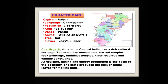Chhattisgarh — capital Raipur. Chhattisgarh, situated in central India, has a rich cultural heritage. The state has monuments, carved temples, rock paintings, Buddhist temples, tiger reserves and wildlife sanctuaries. Agriculture, mining and energy production is the basis of the economy. The NTPC is located in Chhattisgarh and helps in the production of energy and electricity supply. The state also produces the bulk of tendu leaves used for making bidis.